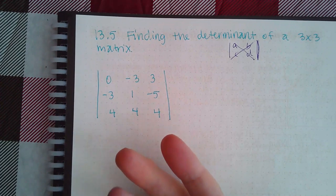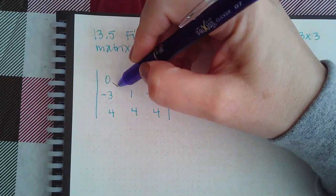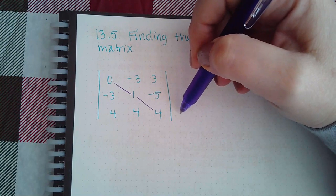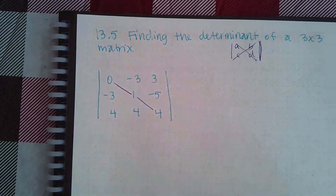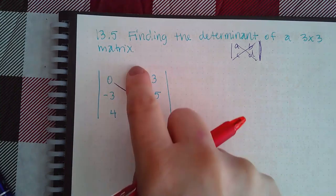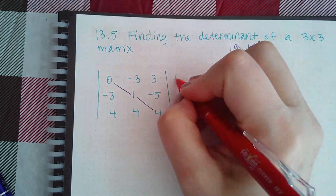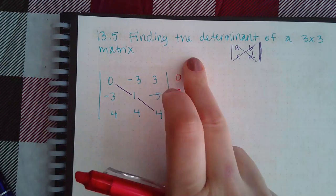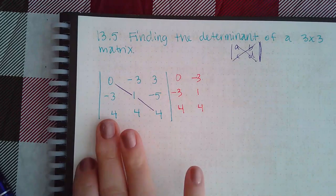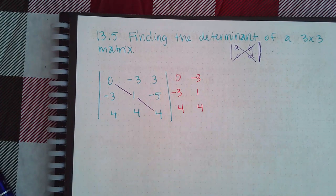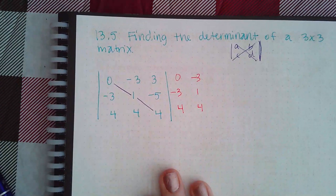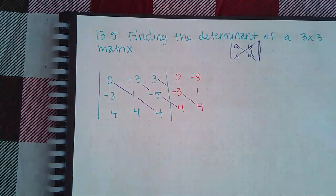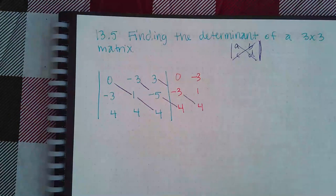In order to multiply three numbers together, the first diagonal works fine, but the next one is missing a third element, and the one after that is missing two elements. To get around this, you take the first two columns and rewrite them outside the bar on the right-hand side — it must be on the right-hand side. These two columns are written in their respective order. With those two columns repeated on the outside, you now have complete diagonals — three of them, as expected for a three by three matrix.